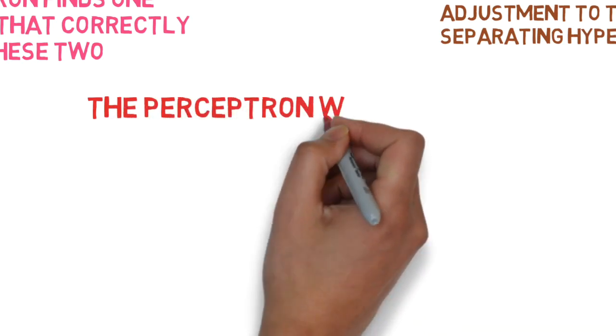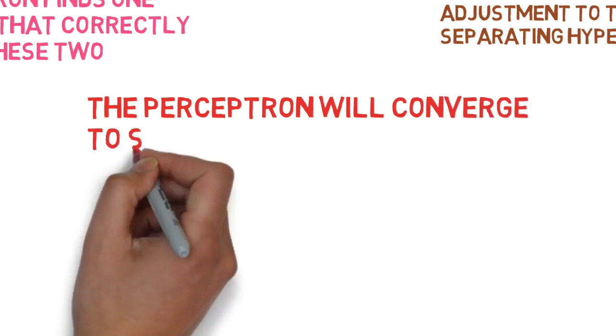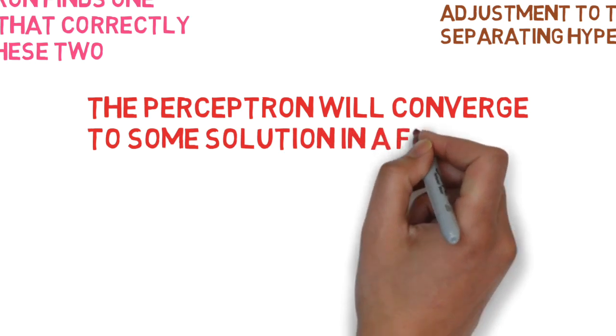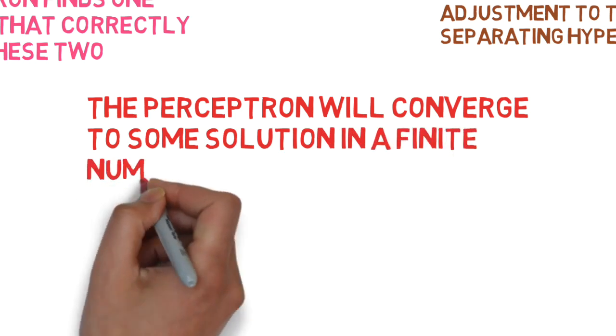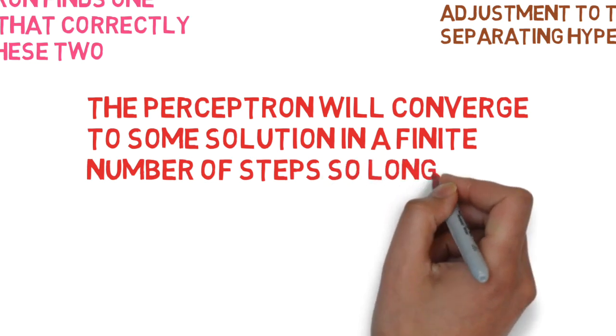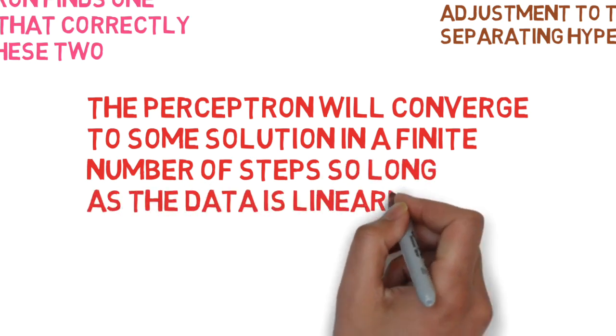The perceptron will converge to a particular hyperplane so it will converge to a solution in a finite number of steps, but this is possible only if the data is linearly separable.